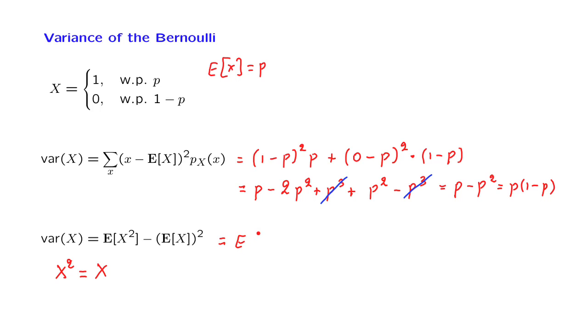So what we have here is the expected value of x squared minus the expected value of x squared. And this is P minus P squared, which is the same answer as before, P times (1 minus P). We see that the calculations and algebra using this formula were simpler.